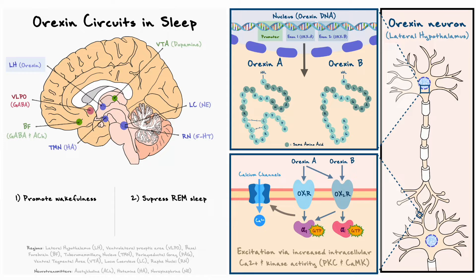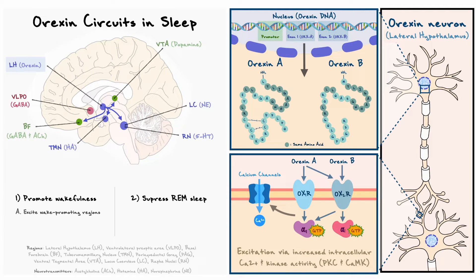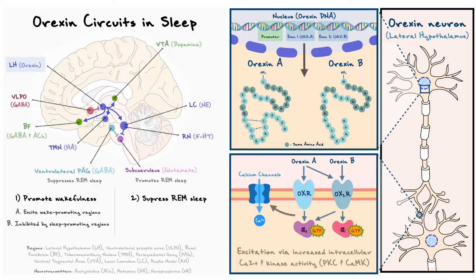To promote wakefulness, orexin neurons send excitatory projections to modulate key wake-promoting areas. Additionally, orexin neurons get inhibited by the VLPO, which entails that they are likely to promote wakefulness. In terms of their role in REM sleep, one important area that generates REM sleep is a region called the subceruleus, and this region receives inhibitory projections from the ventrolateral periaqueductal gray and the locus ceruleus to suppress the REM sleep it generates. Orexin neurons contribute to suppressing REM sleep as they provide excitatory projections to the ventrolateral PAG and locus ceruleus, and thus indirectly turn off REM sleep.